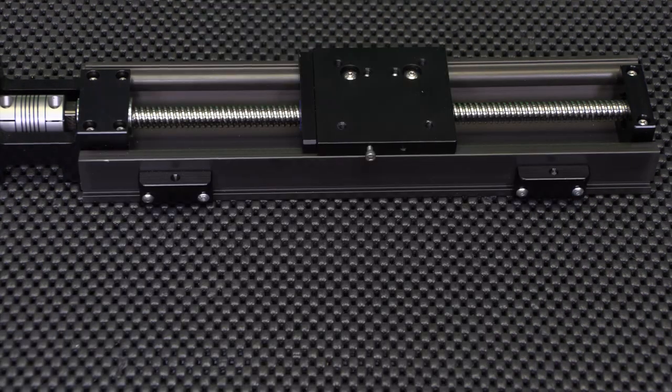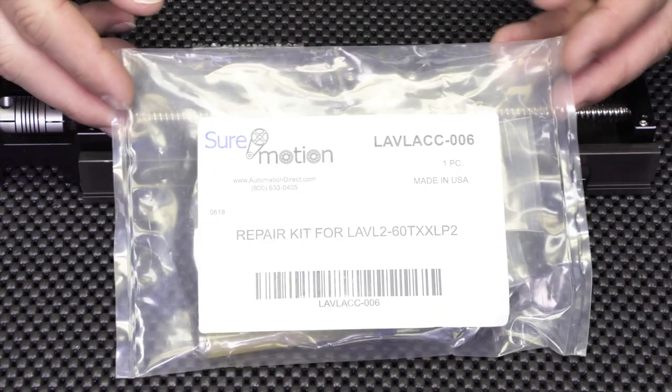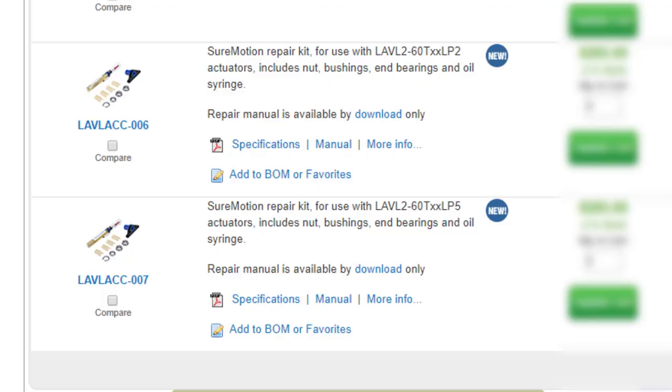I am rebuilding an LA-VL2-60T-06 LP2 slide that has 6 inches of travel and a 0.2 inch pitch which will require the repair kit with a 0.2 inch lead screw pitch. There is a separate kit for lead screws with a 0.5 inch lead screw pitch. The instructions are the same for both kits.